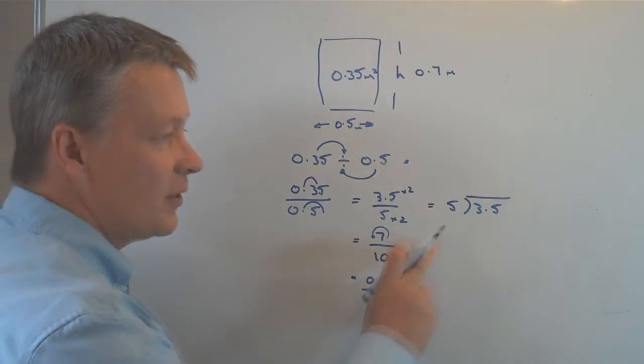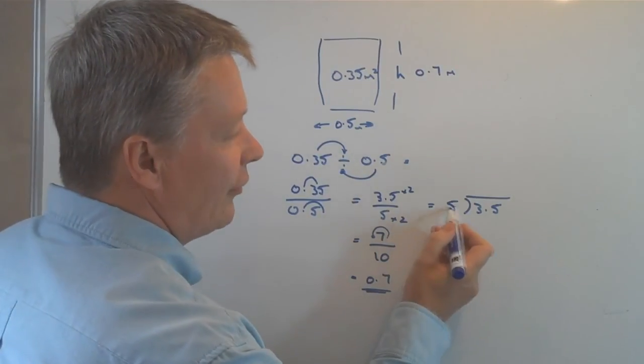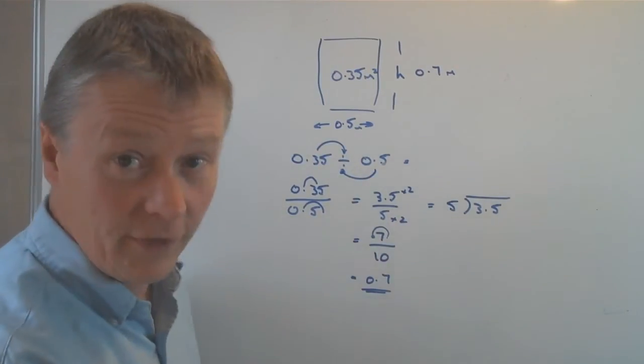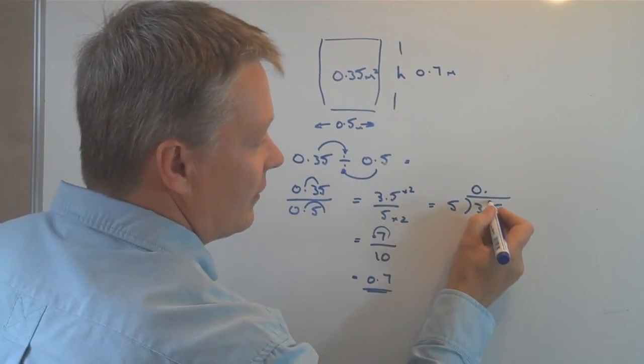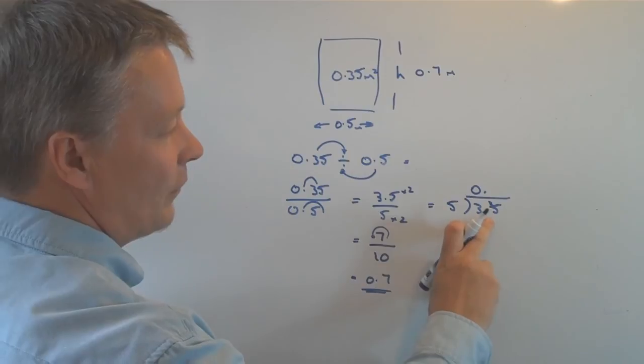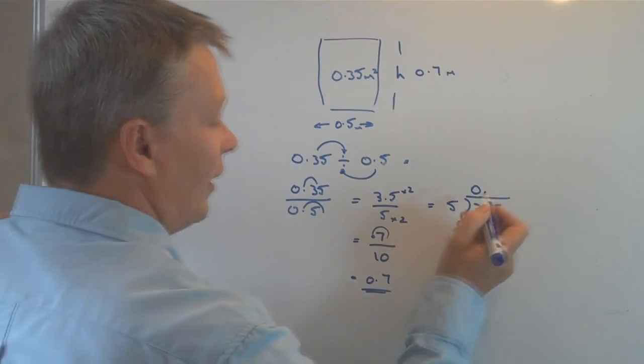Just to check, I did say we could do it by short division. So how many lots of five are there in three? Well, there's none, so I put a zero there. I'm going to pass that three on to the next number. How many lots of five are there in 35? Well, there are seven.